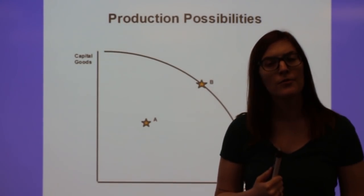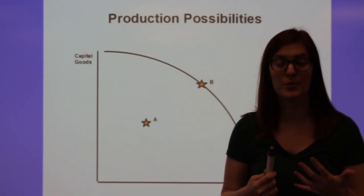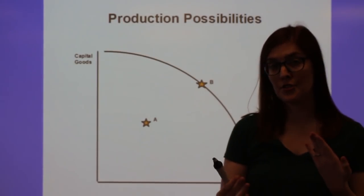Now, the reason why this is a macro version of this graph is because it looks at all of the goods a country can produce, which is summarized by the two types of goods, capital and consumer goods.